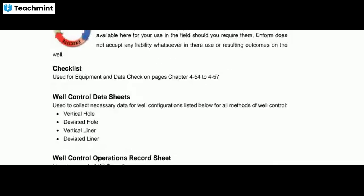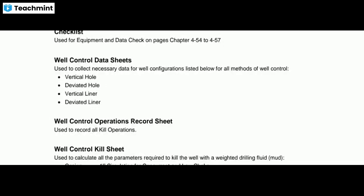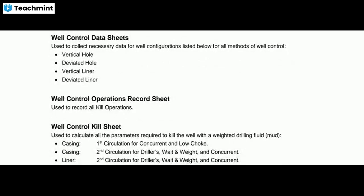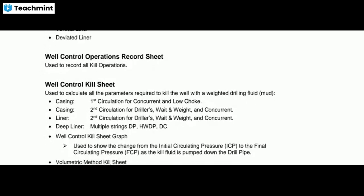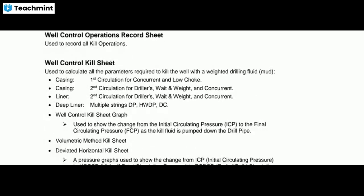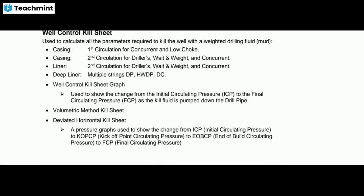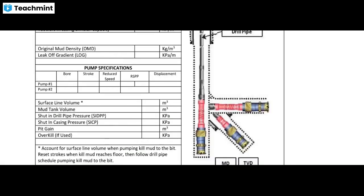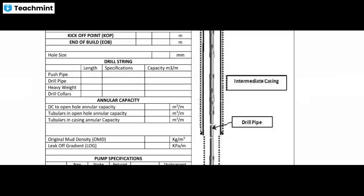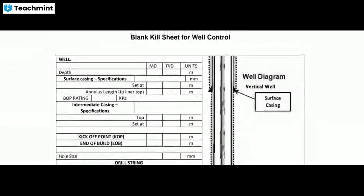The checklist for equipment includes data sheets for vertical hole, deviated hole, vertical liner, and divided liner. Then well control operation record sheet, and well control kill sheets: casing first circulation, casing second circulation for driller's method, wait-and-weight method, and concurrent method liner, deep liner, well control sheet graphics, volumetric method kill sheet, and horizontal kill sheet.